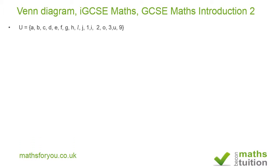We've got a universal set which consists of the elements: A, B, C, D, E, F, G, H, L, J, 1, I, 2, O, 3, U, and 9.